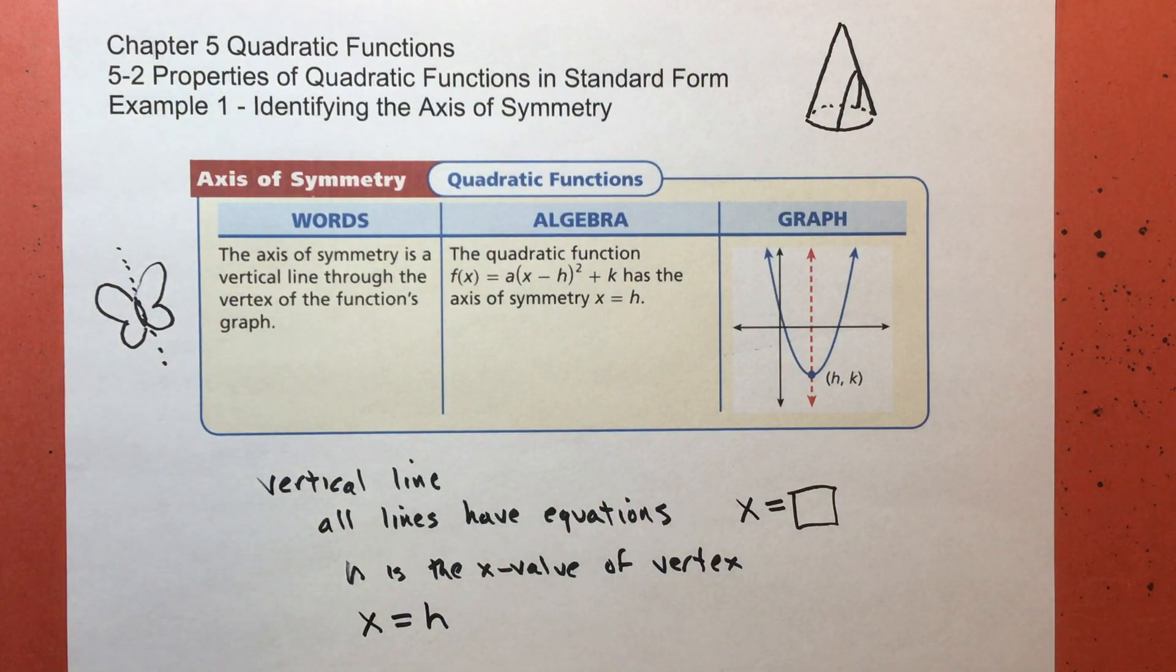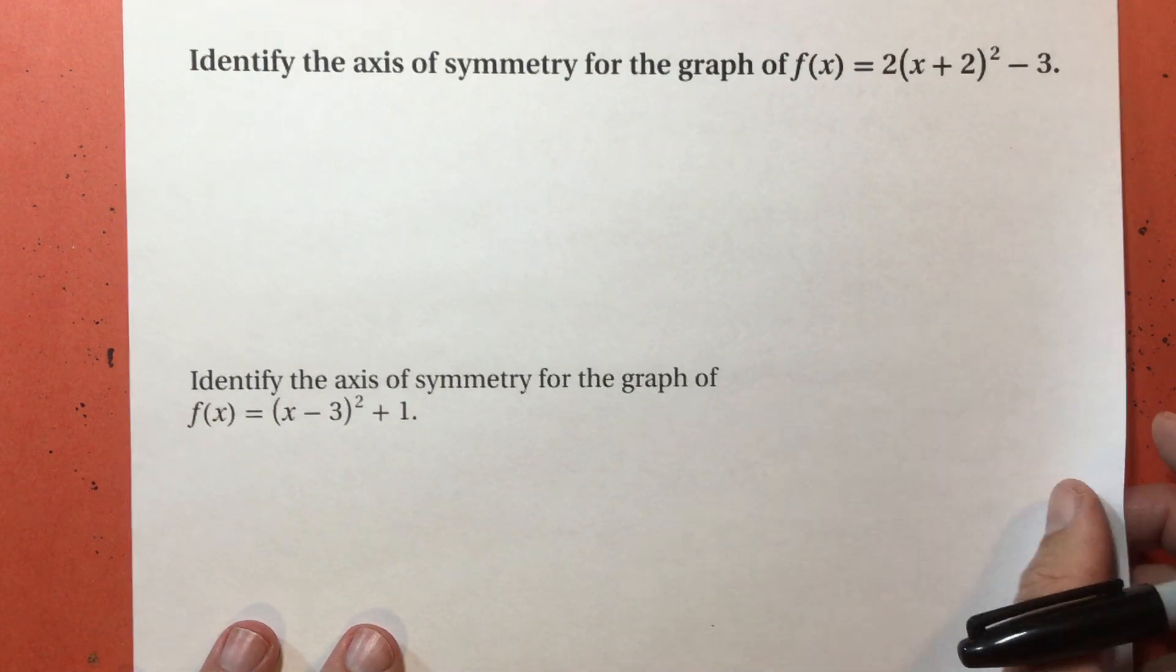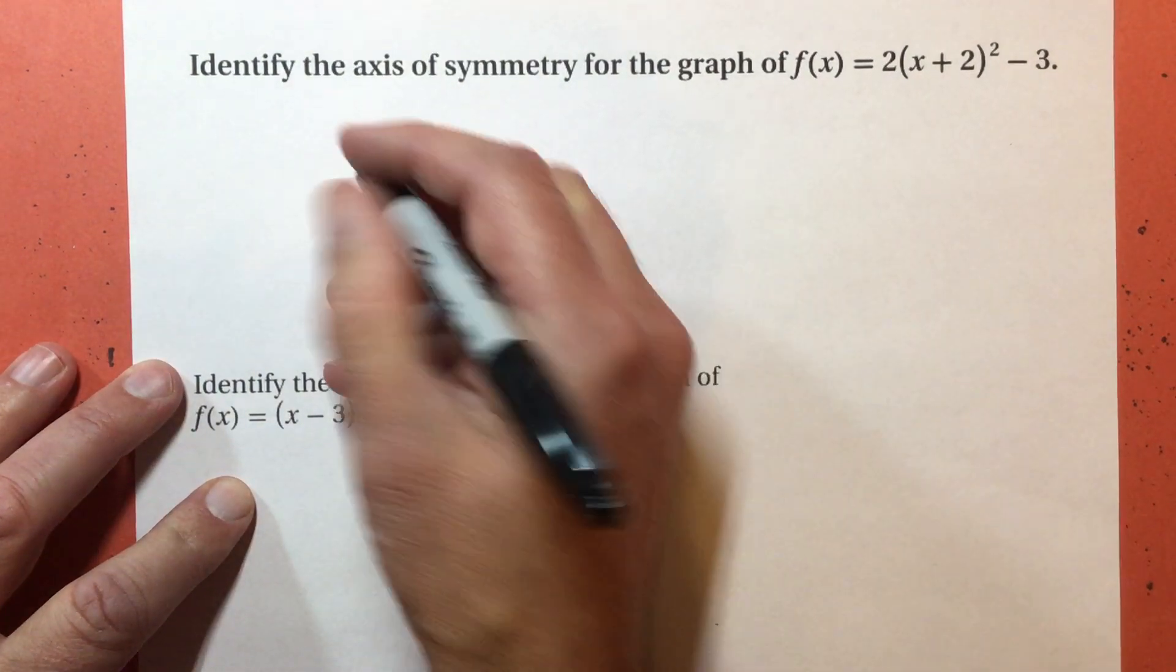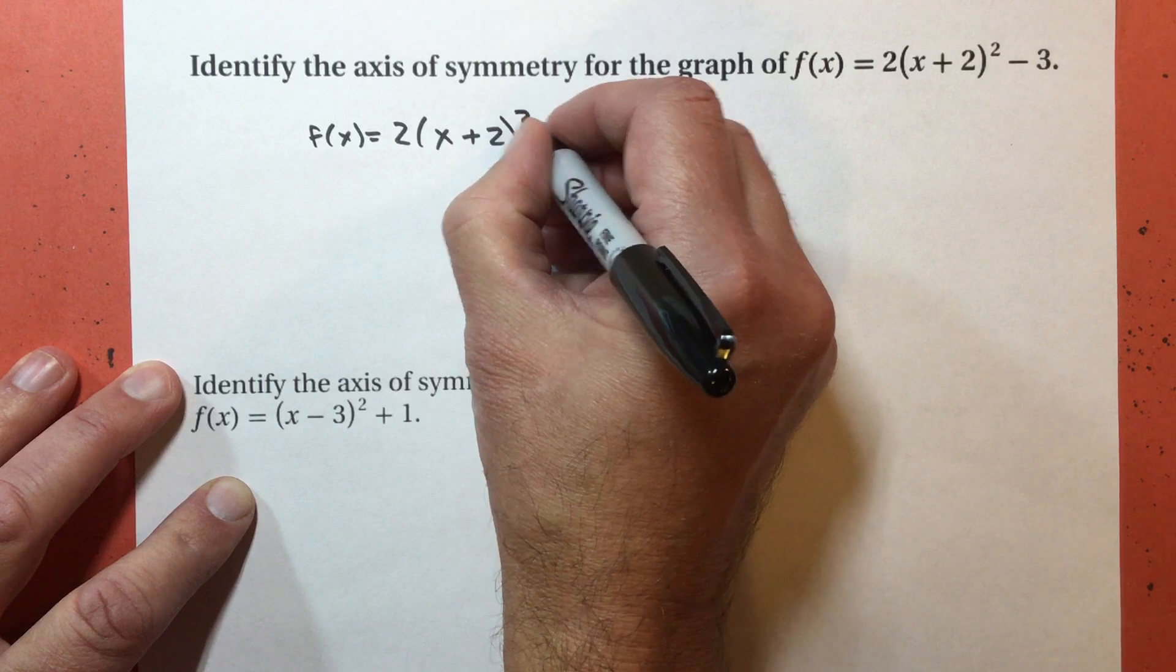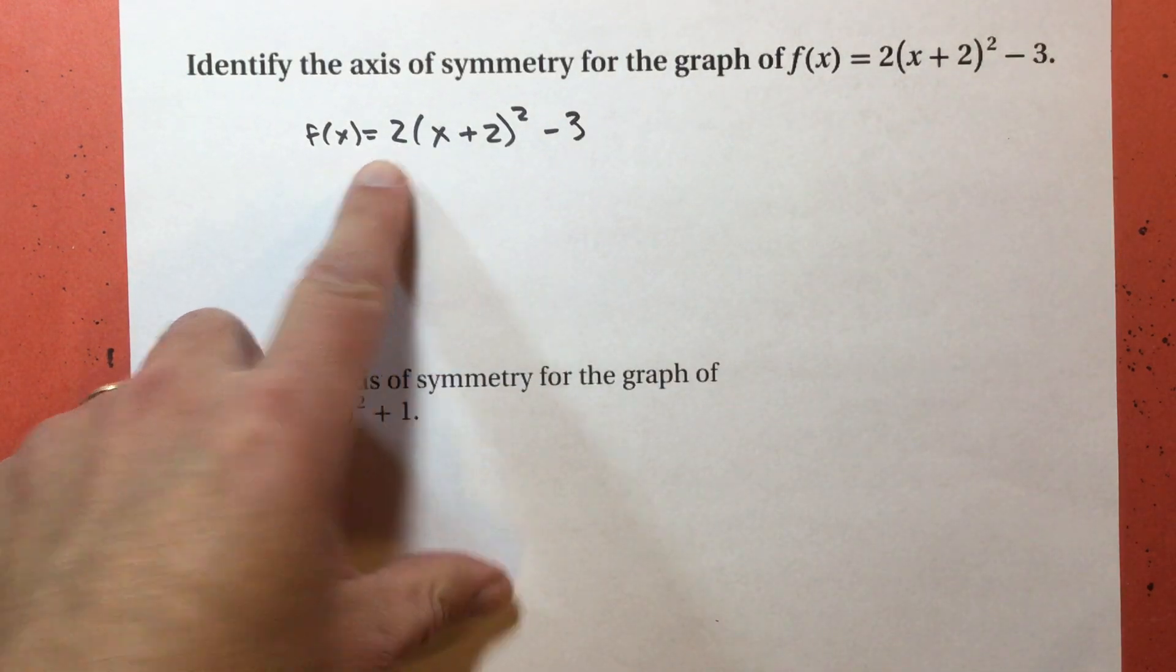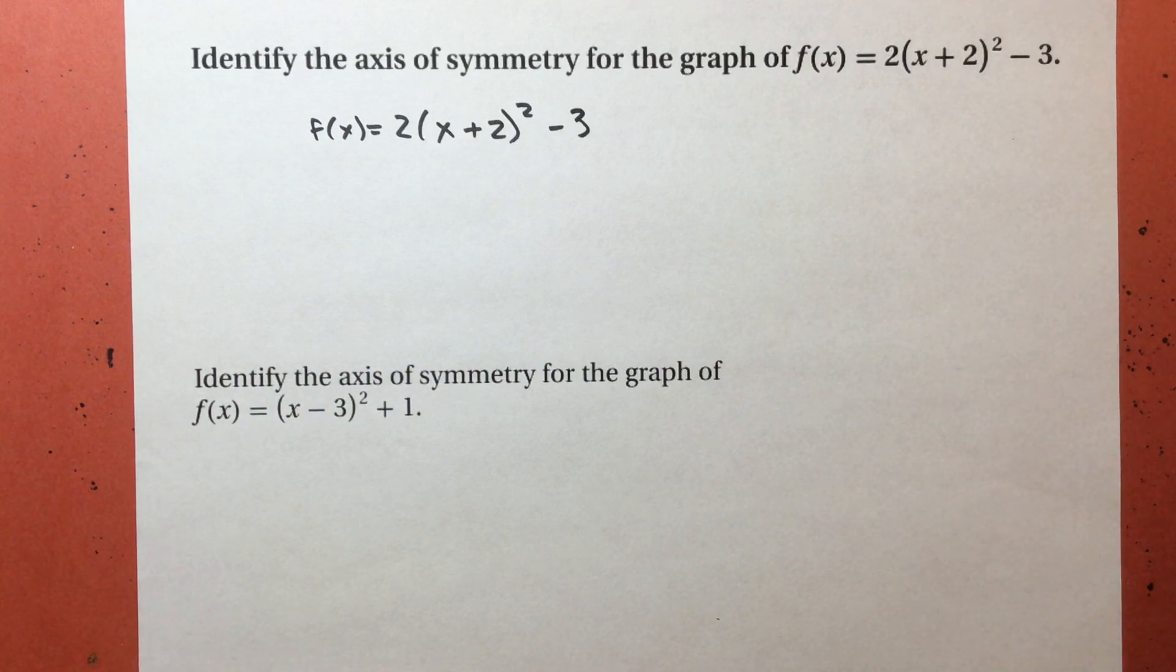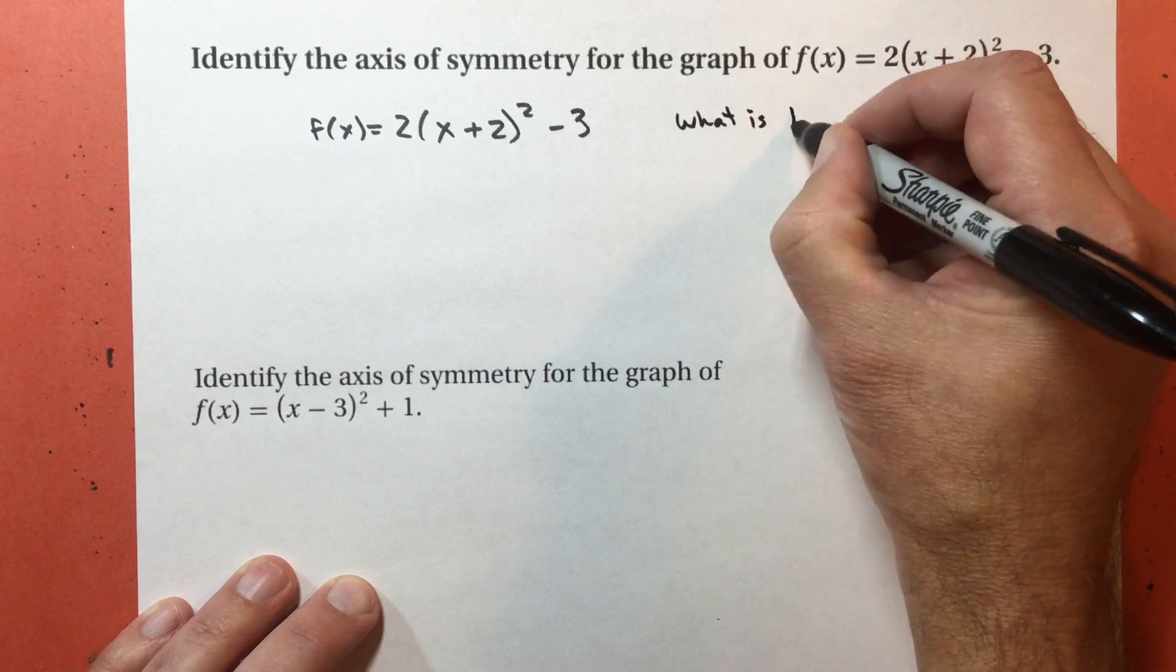Let's do a couple of examples. The first one, the function is f(x) = 2(x + 2)² - 3. There's a lot going on here. I know where the vertex is. I know it's from the parent function with horizontal translation, vertical translation, and that 2 tells me it's a vertical stretch. The only part I need now is what is h?